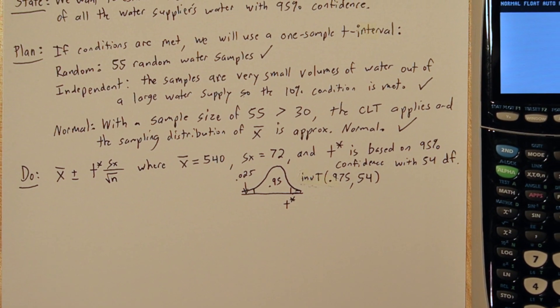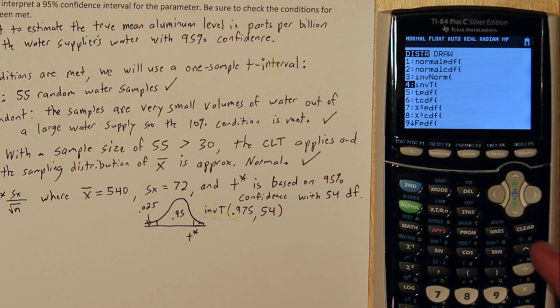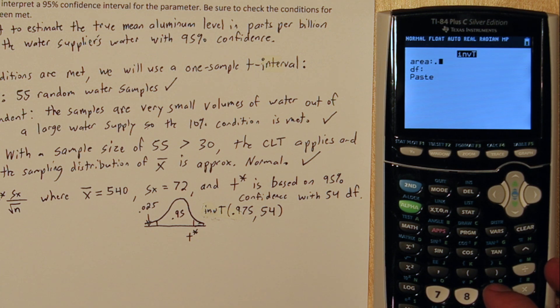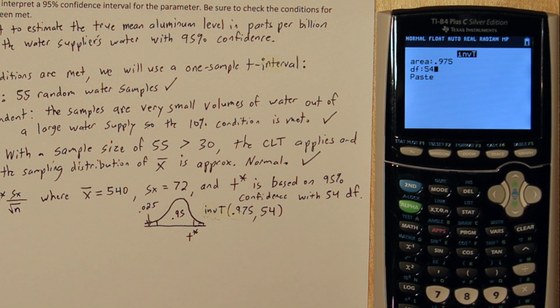To do this on the calculator, press 2nd, then Vars. This is our distribution menu. Go down to inverse t, and for area, put 0.975. For degrees freedom, put 54, which is the sample size of 55 minus 1. After you press paste, press enter again. Here's our critical value, 2.0049 approximately.